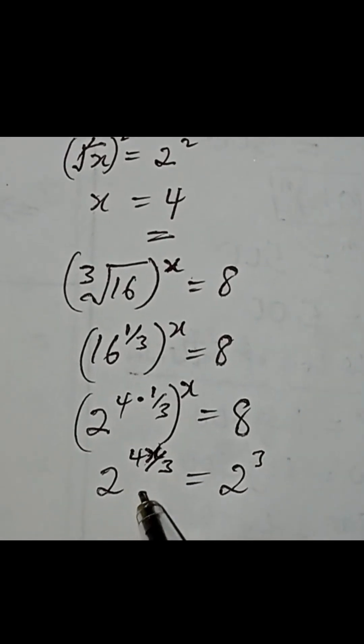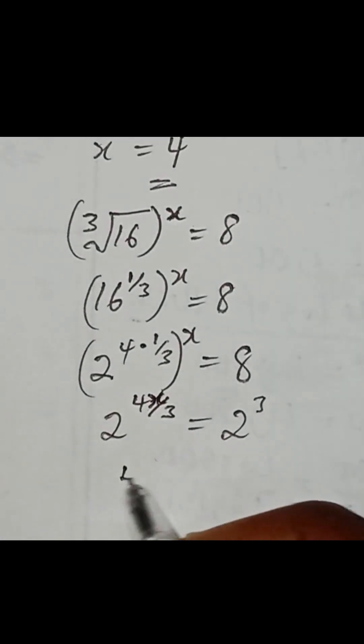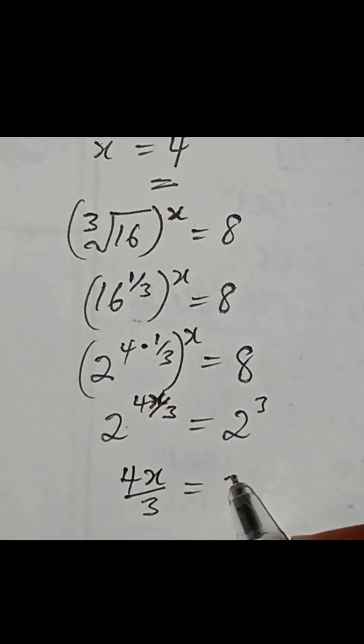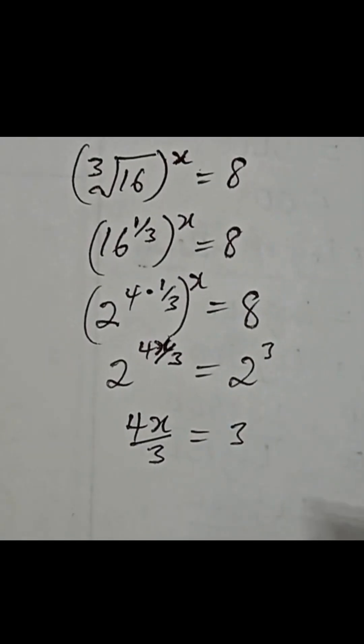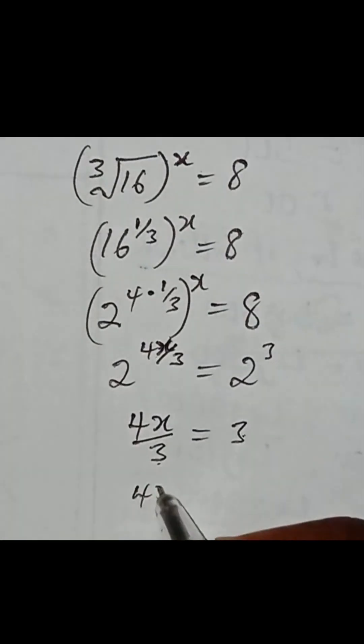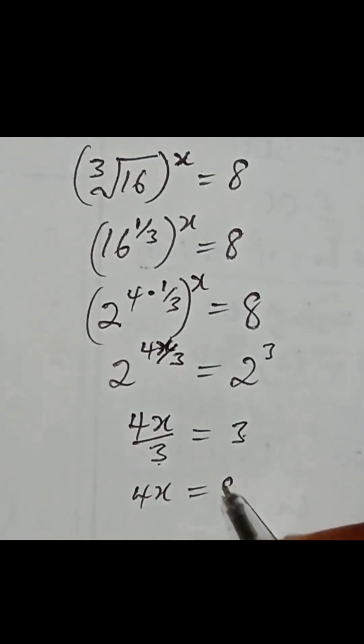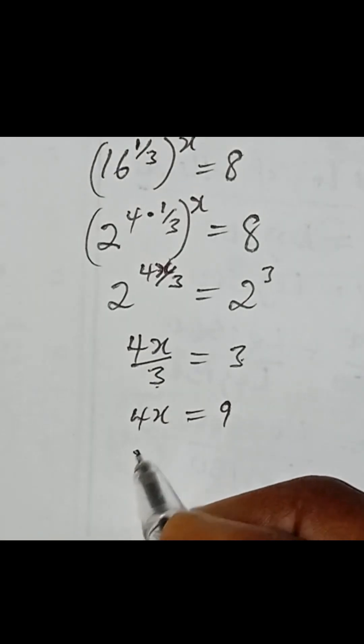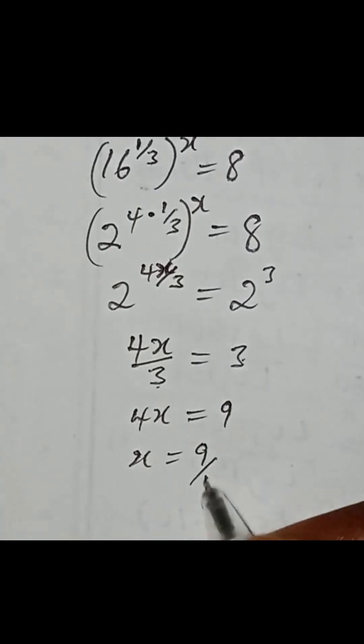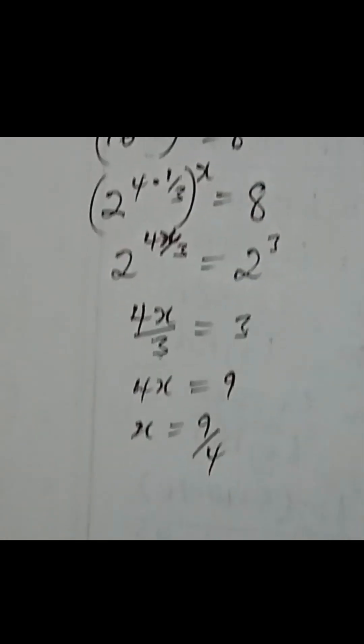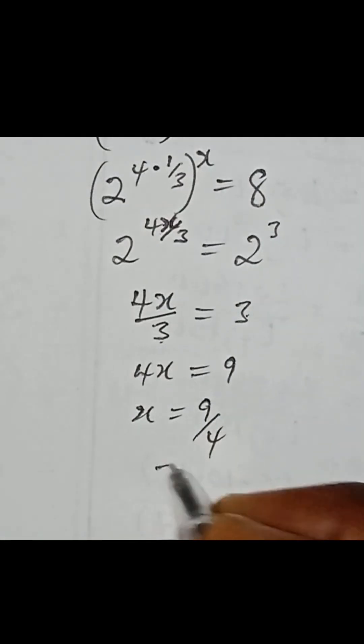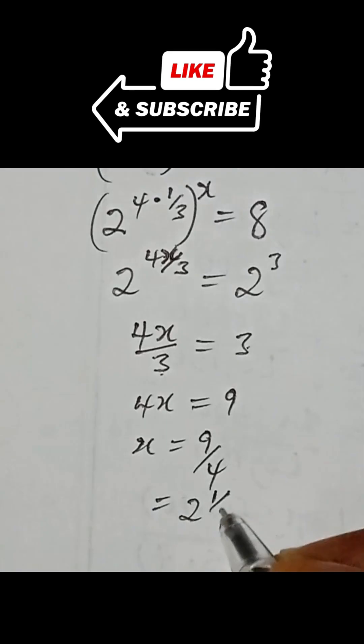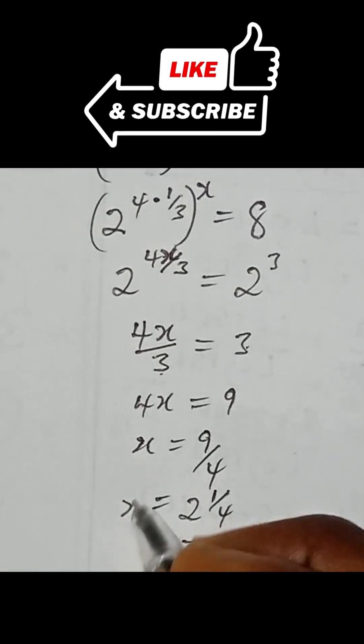Then the base are the same. Let's equate the exponents. So this is given as 4x over 3 equal to 3. So let's multiply this. So we have 4x equal to 9. Then let's divide both sides by 4. We have x equal to 9 over 4. Then this is the answer or you can write it as 2 and 1 over 4 as our x.